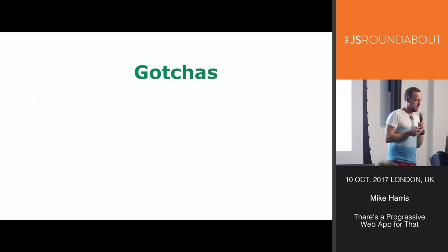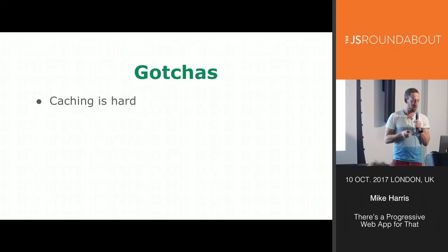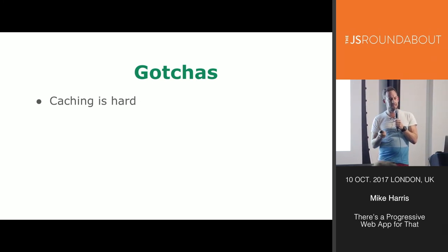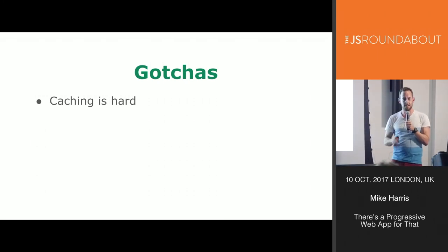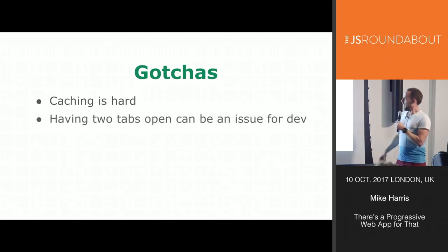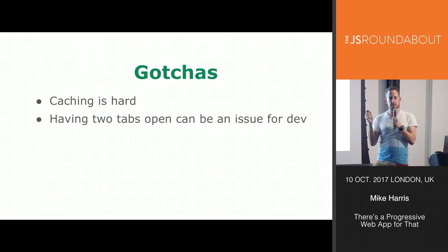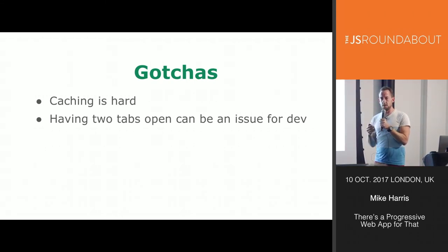Gotchas — there are always gotchas. What are the two hardest things in computer science? Caching, naming things, and off-by-one errors. Caching is hard. We get it wrong at Moo — there have been outages because we screwed up headers. Don't cache customer user data if it shouldn't be cached; you really don't want to give someone's private data to someone else — that's my number one tip. In Chrome, sometimes you have two tabs open and the service worker is registered with one tab and won't refresh — you close everything and it's still not working, then you realize you've been refreshing the live site not your dev version. But there are definite gotchas with service workers you need to get used to.